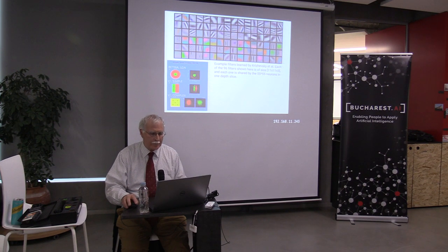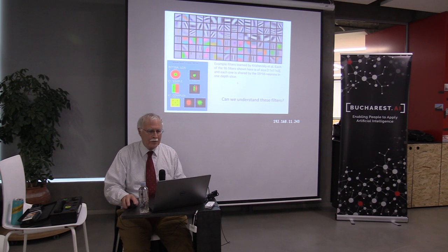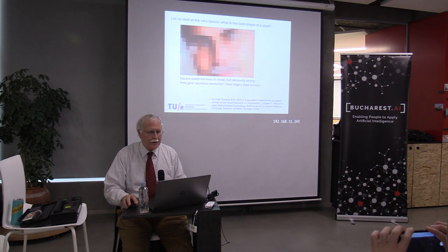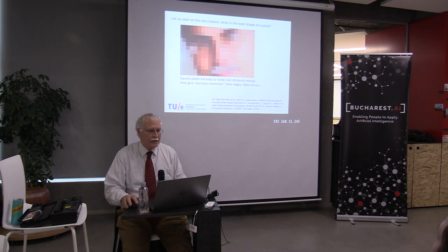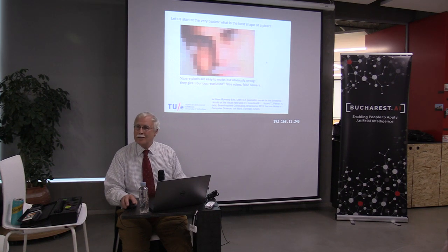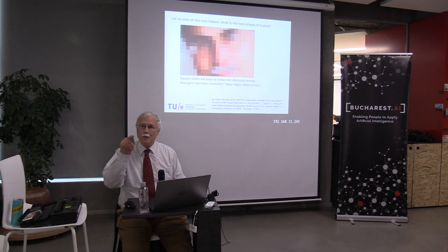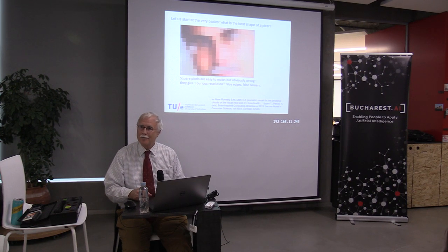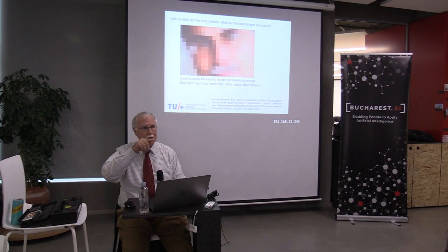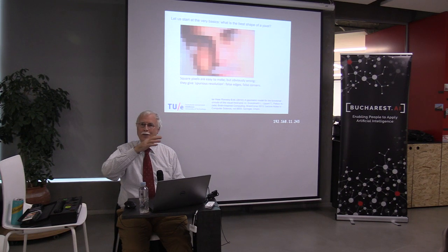Can we understand those filters? I'd like to give you a little mathematical approach from first principles. Let's have a look at the single pixel. These are square pixels — the most stupid pixel you can think of. We normally make pixels like this, but there are many things wrong: I have no squares in my face, I have no corners. These are artifacts of zooming in because the pixel is wrong. The pixel should not be a square — it should be a circle, because I don't want corners. The pixel should not have steep edges but should be smooth. Maybe the pixel should look like a Gaussian bell. So what is the best shape of the pixel?